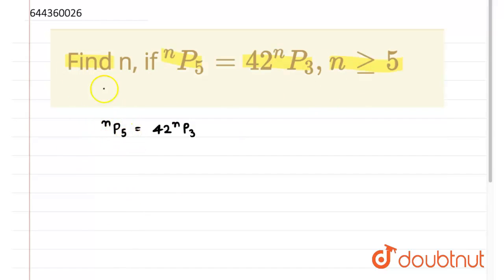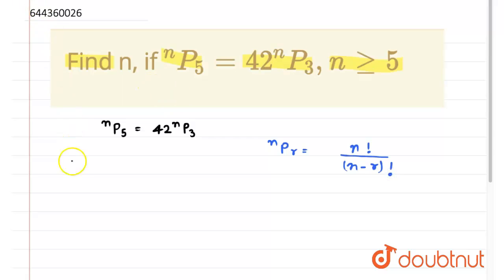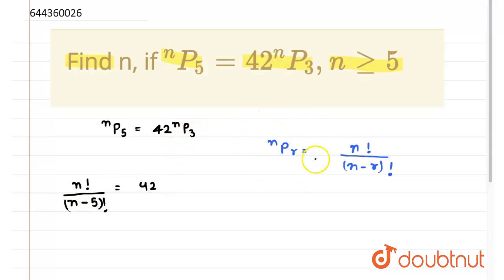First, we will expand nP5. It is in the form of nPr. The formula for nPr is n factorial upon (n minus r) factorial. So if we expand nP5, we get n factorial upon (n minus 5) factorial, which is equal to 42 times nP3, which expands to n factorial upon (n minus 3) factorial.